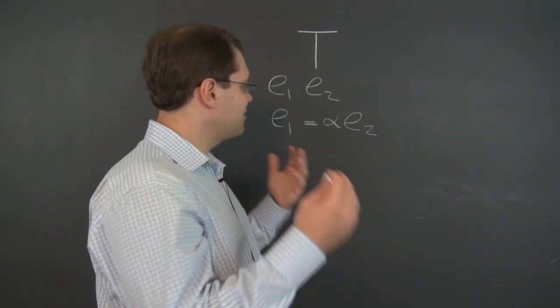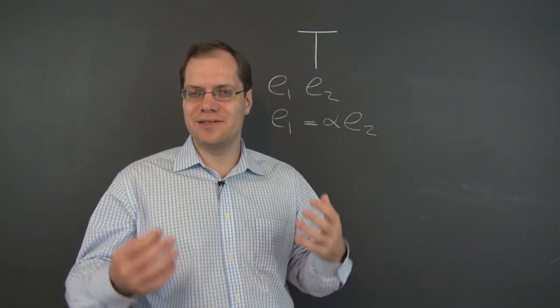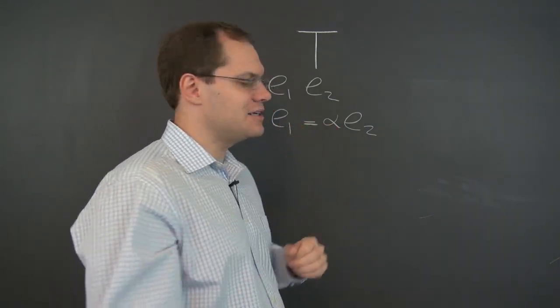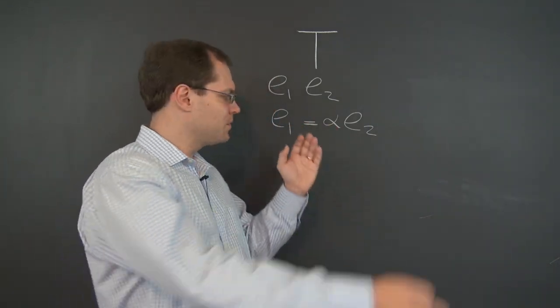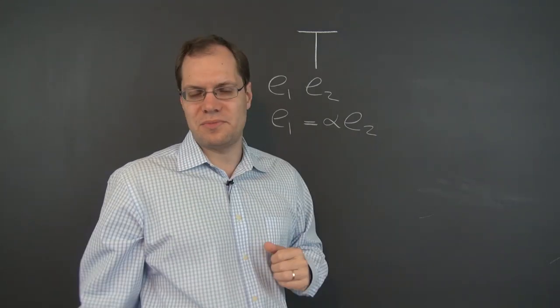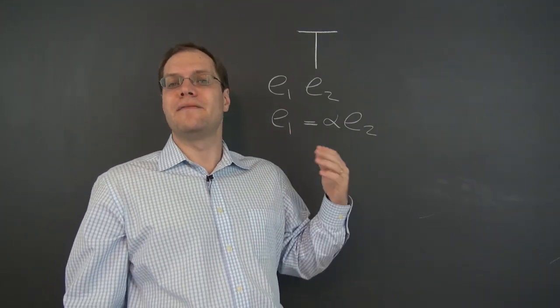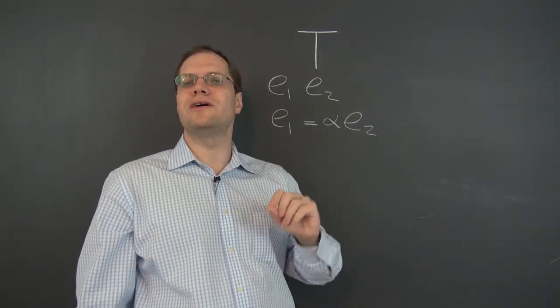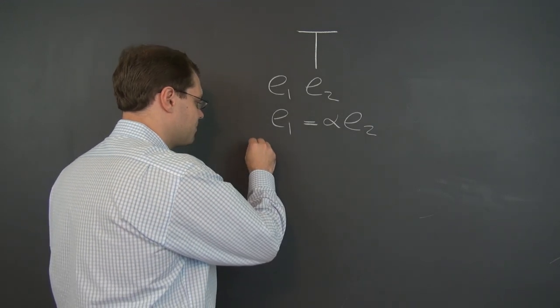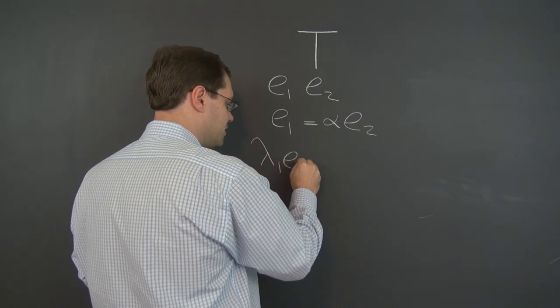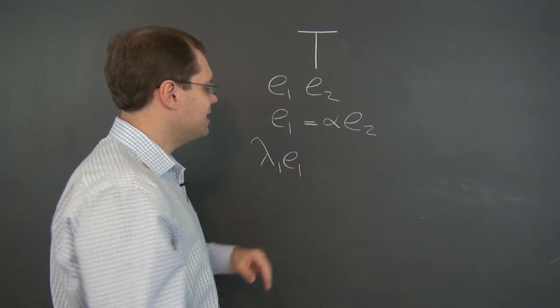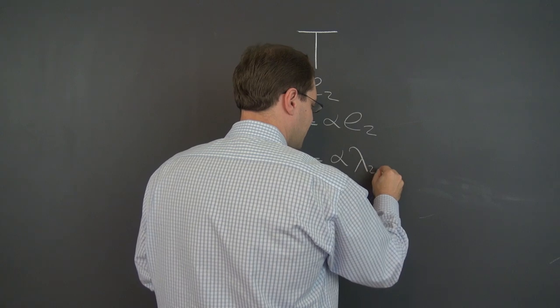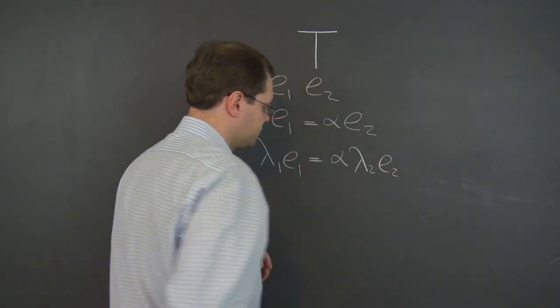Let's now do the only thing we can do. We have very few elements, very few things we can do. So let's do the one thing we can do, which is apply the linear transformation to this identity. If two vectors are equal, their images must be equal. So let's apply this linear transformation to this identity. And because these are eigenvectors, we know exactly what will happen. E1 will become lambda 1 E1 and E2 will become lambda 2 E2.